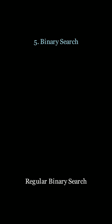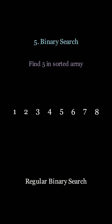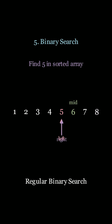Let's take a look at classic binary search for a refresher. If we want to find a target, we use left and right pointers to calculate a mid. If the mid value is smaller than our target, then we move the left pointer; if it's greater than the target, we move the right pointer, until we converge to an answer in log n time.